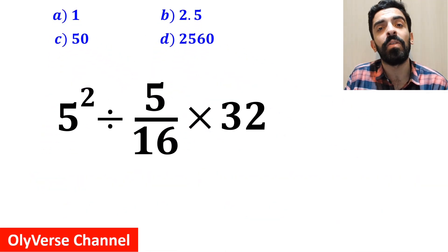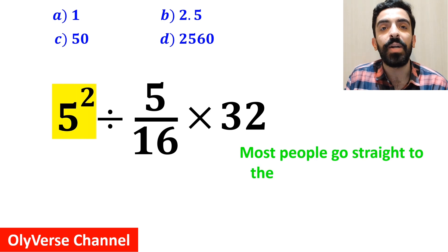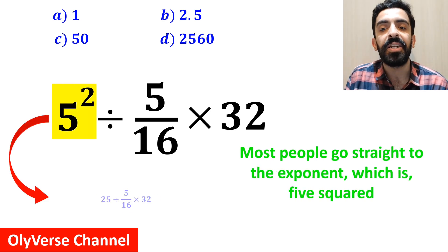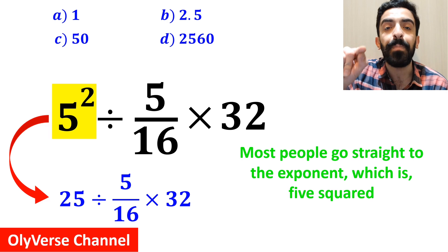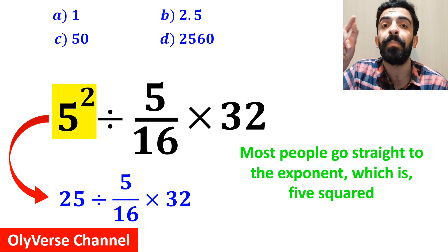And the first step to solve this question, most people go straight to the exponent, which is 5 squared, and they write this expression as 25 divided by 5 over 16 multiplied by 32.